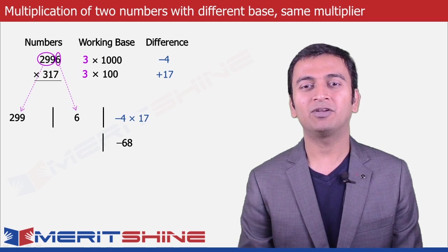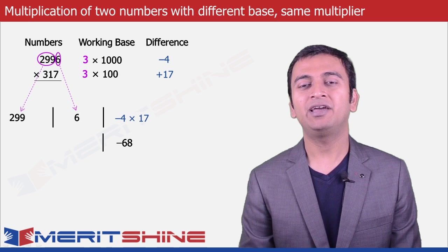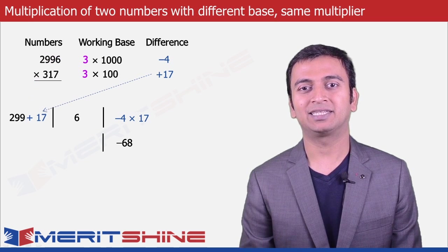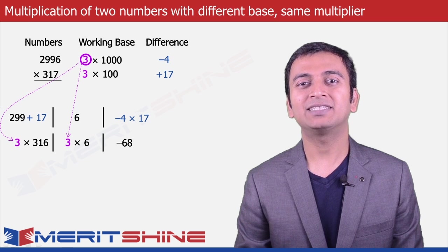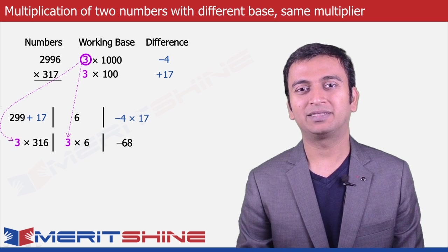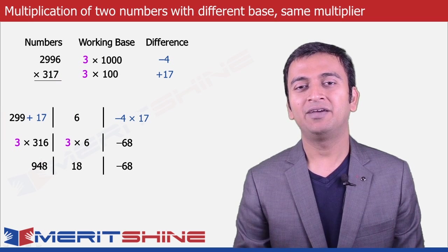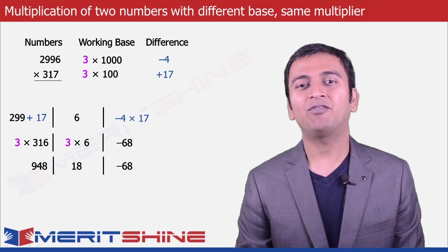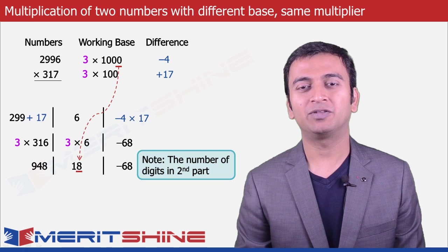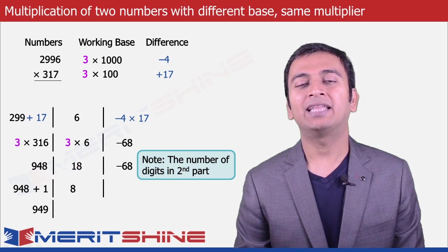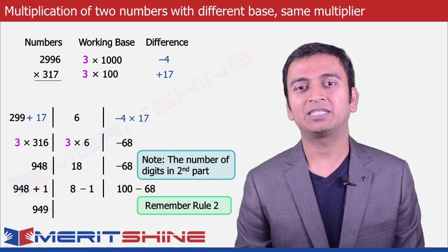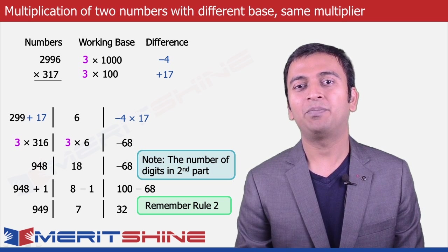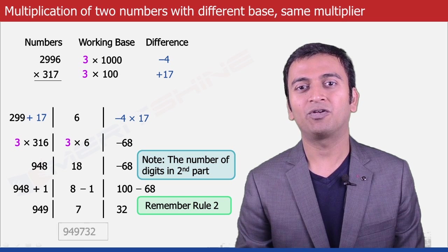The 6 will come to the second part, and 299 will go to the first part along with the difference from the second number, which was plus 17, making the first part 316. Since our multiplier is 3, we will have to make a couple of adjustments: multiplying 316 by 3 gives us 948, and the second part 6 will also be multiplied by 3, giving us 18. Now before we write the final answer, we make some changes. The second part can have only one digit, so the extra 1 is carried over to the first part, making it 948 plus 1, which is 949. Also, the third part cannot be left negative, so it borrows 1 from the second part, which becomes 8 minus 1, giving 7, and the third part becomes 100 minus 68, giving us 32. We can now join these parts and write our final answer as 949,732.